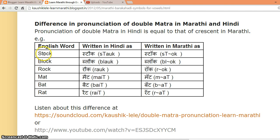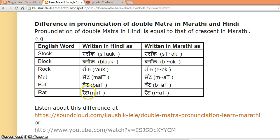So, when you want to indicate the sound 'A' or 'AA', then in Marathi, use the crescent symbol above the consonant and do not use double matras like in Hindi. Because in Marathi, the double matra will be pronounced as 'AI' or 'AU'.